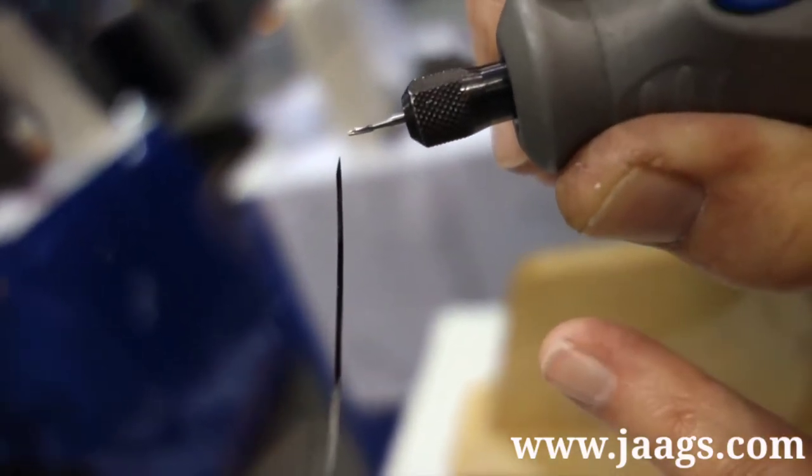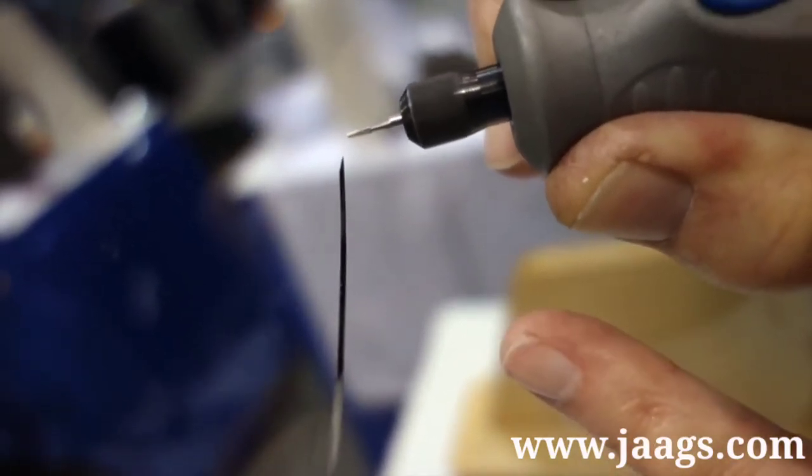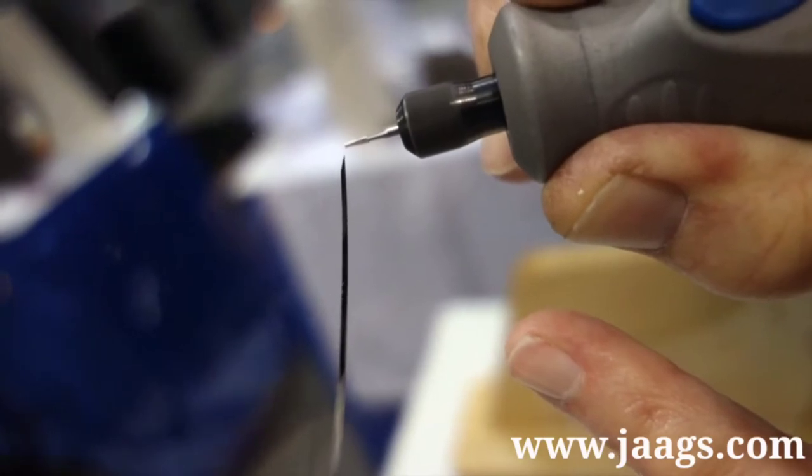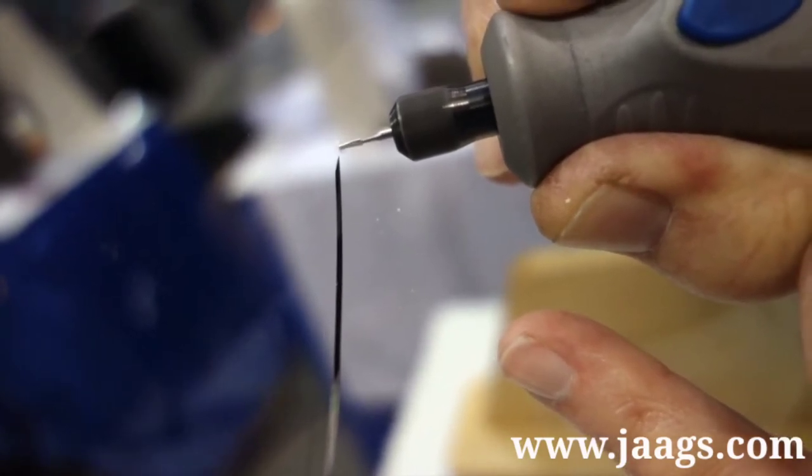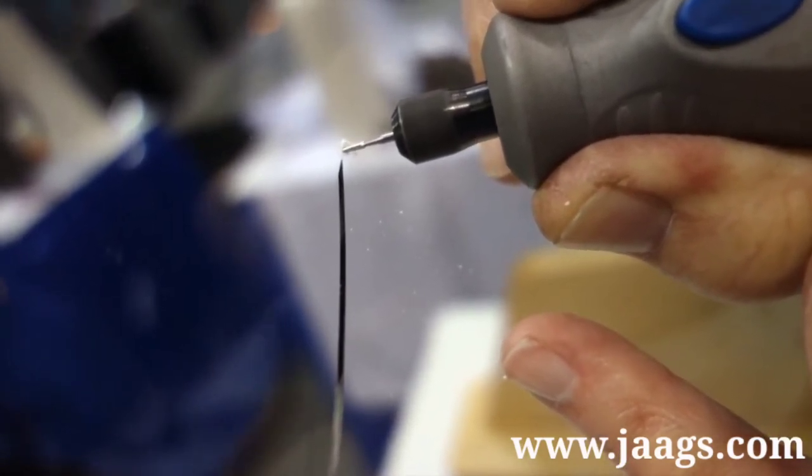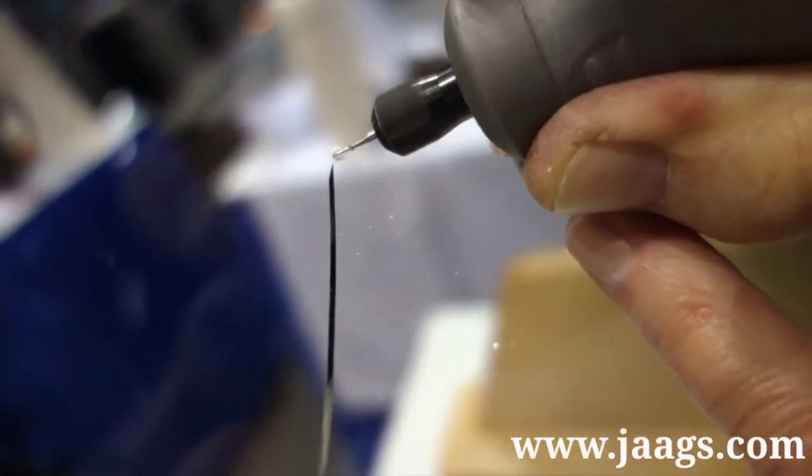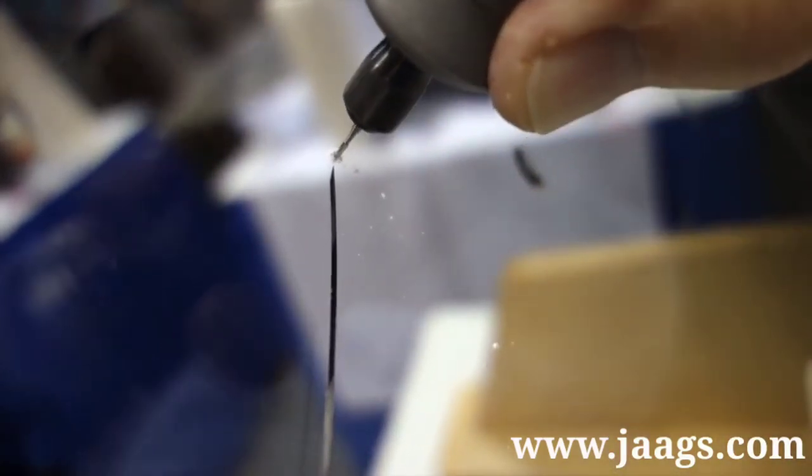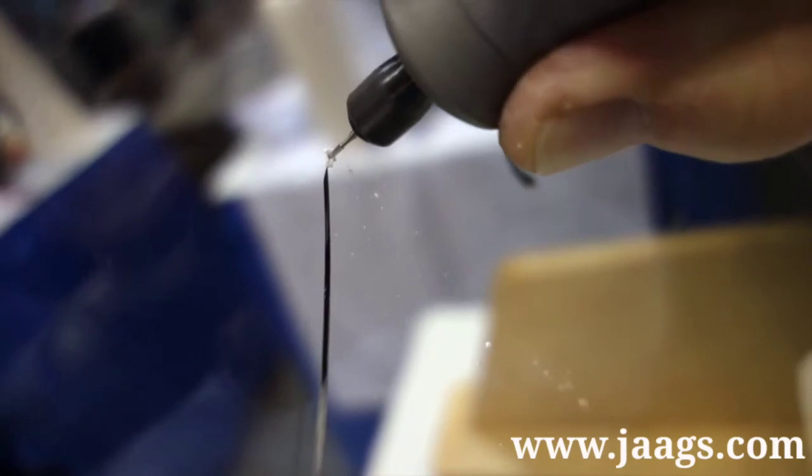Now we will demonstrate how to anchor a long crack. The tech is drilling approximately one-thirty-second of an inch in front of the anticipated path of the crack. Rotate the drill in a circular motion to achieve the optimal hole shape.